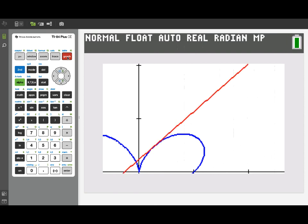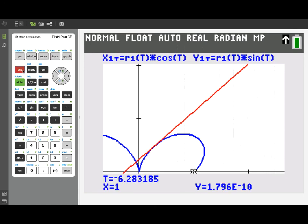And now I'm graphing the polar curve again, this time parametrically. And also graphing the tangent line. How good a job did we do? Well, let's turn on the trace.